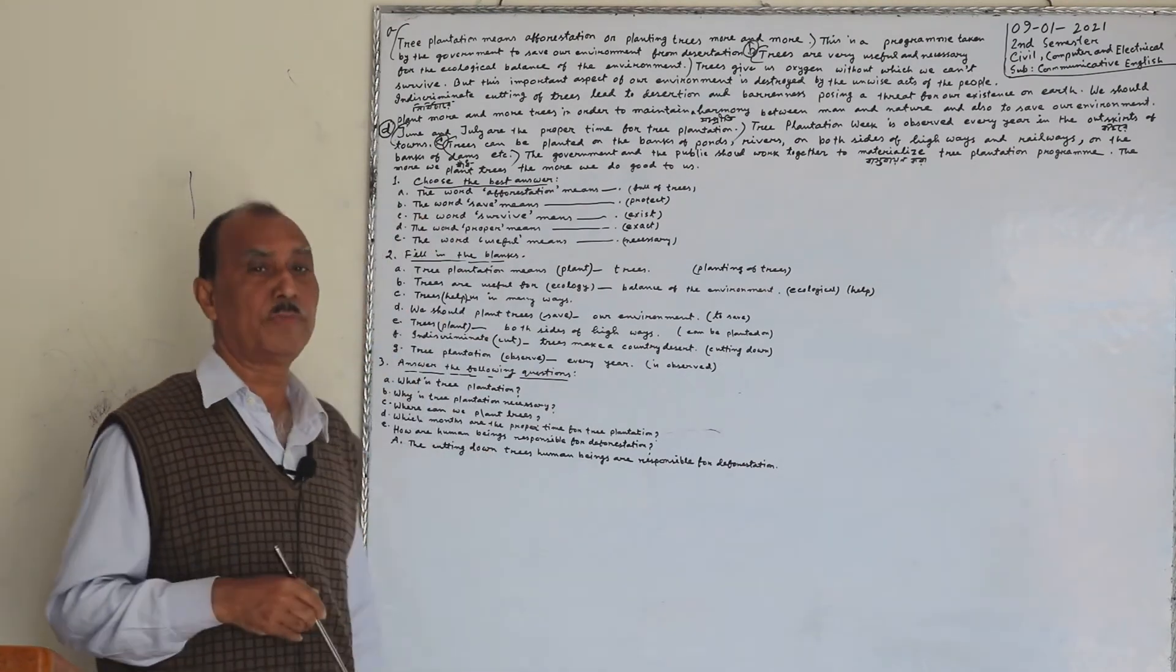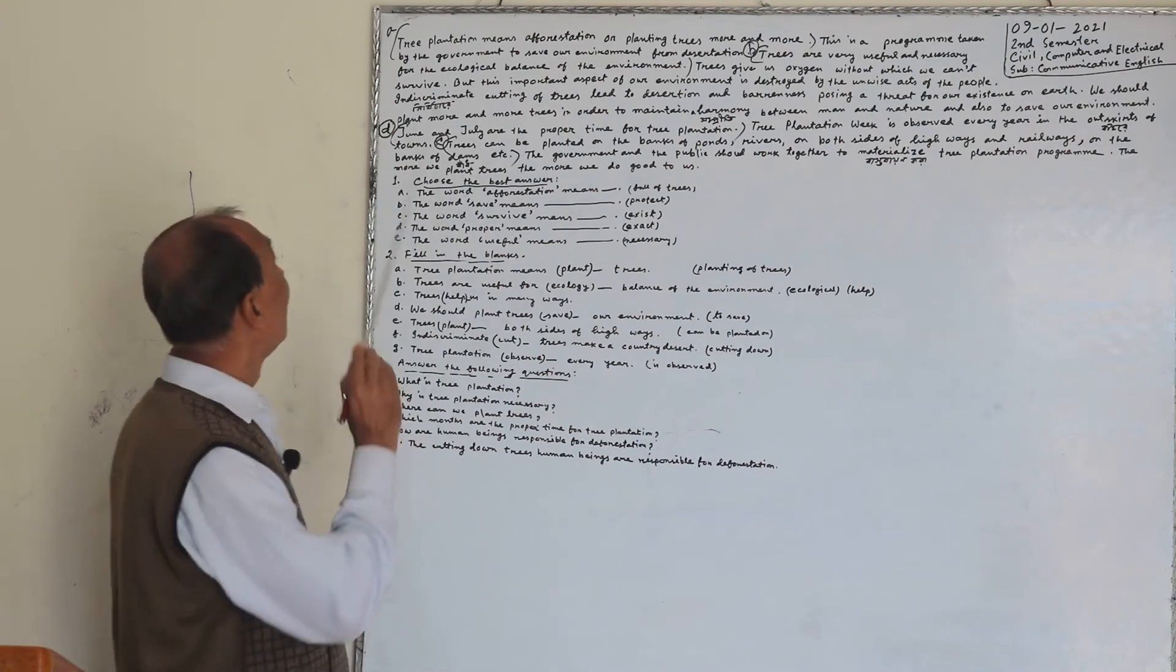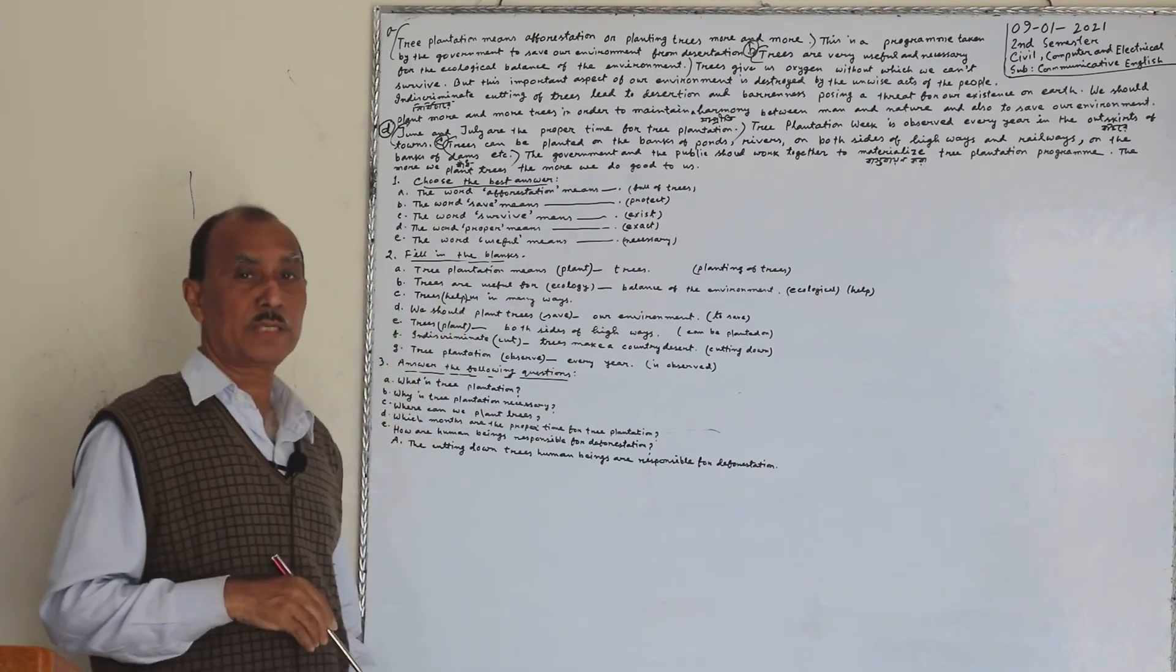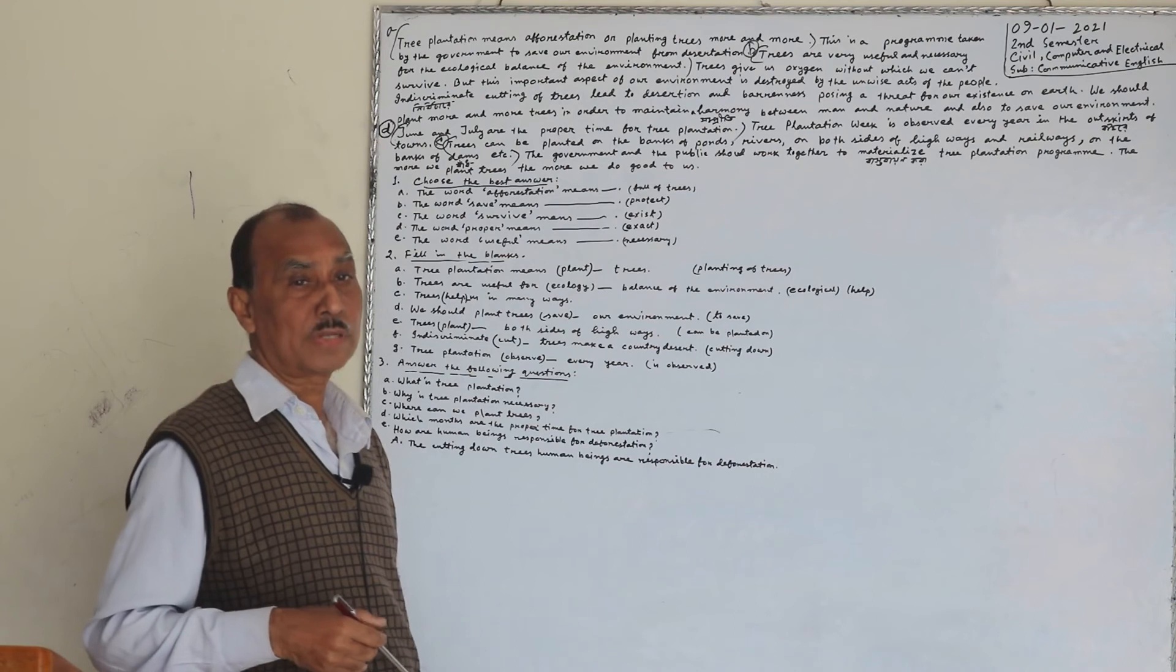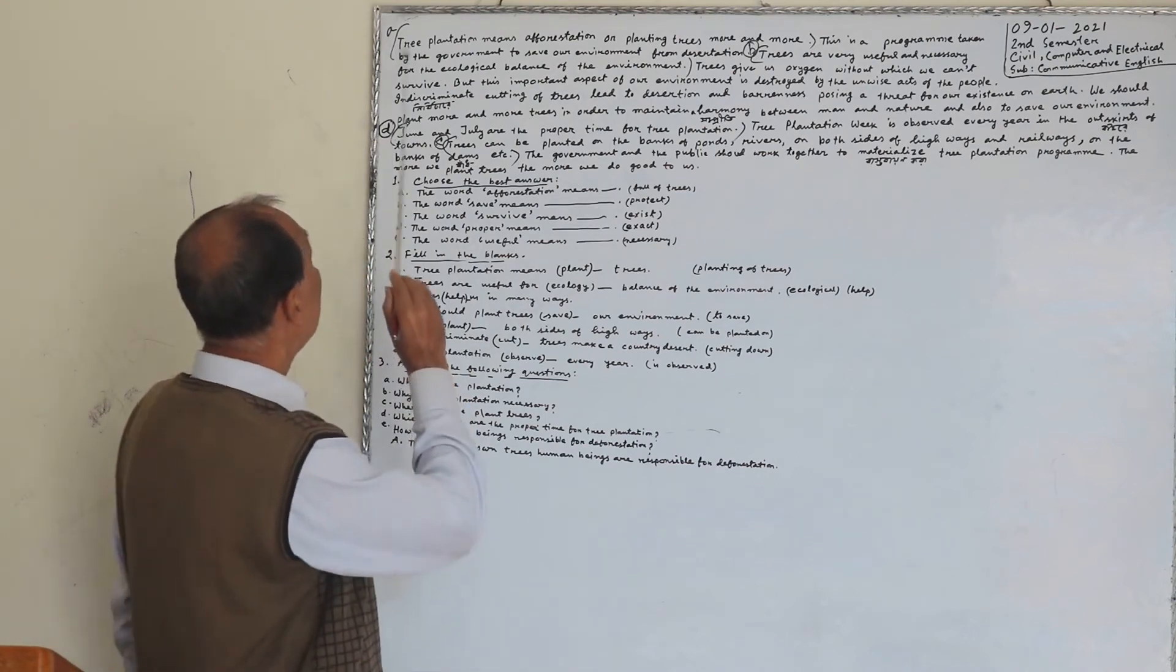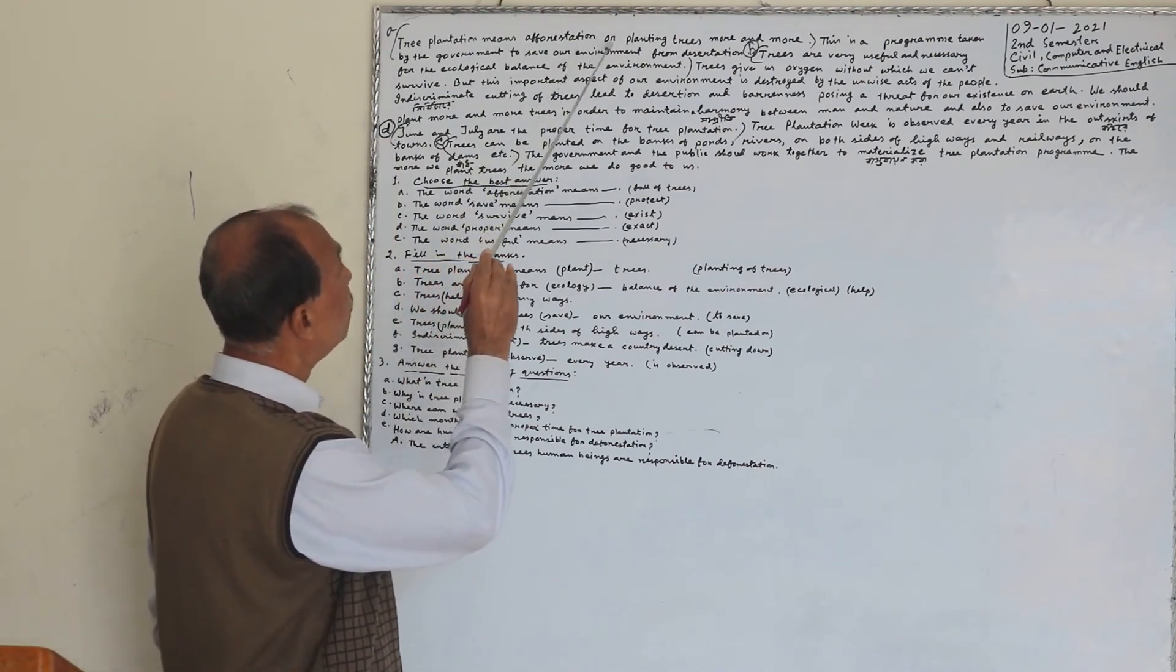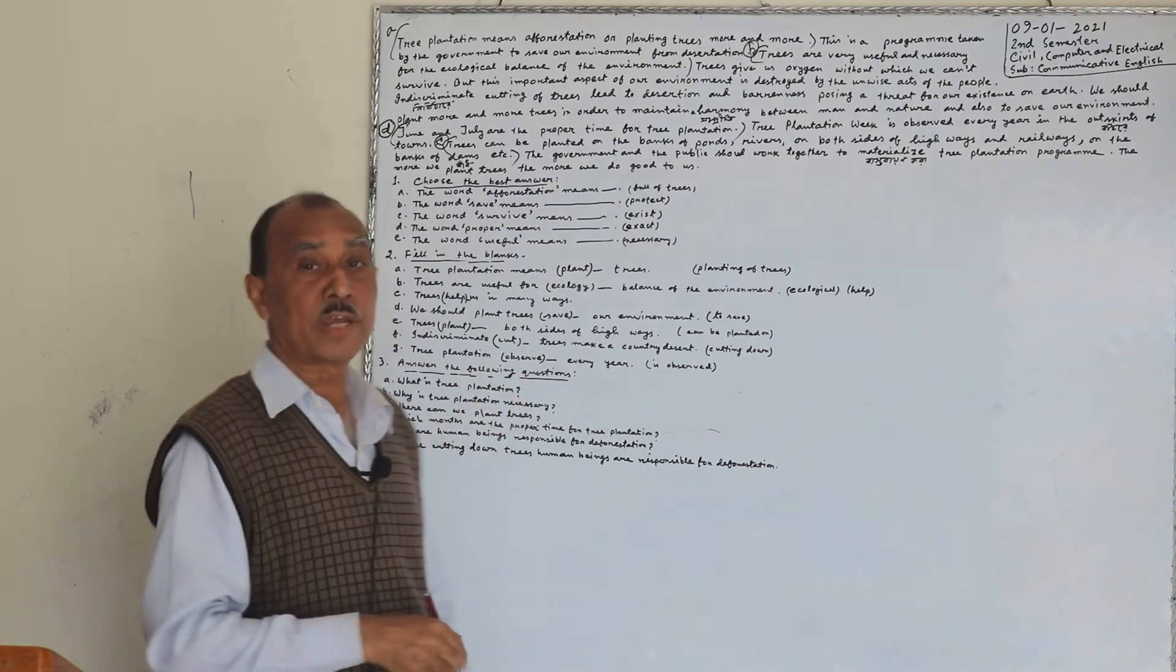What is tree plantation? Tree plantation means, a forestation or planting trees more and more.